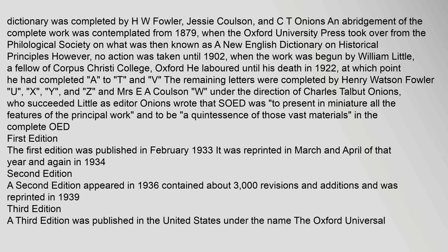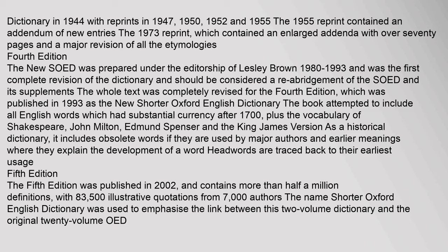A third edition was published in the United States under the name The Oxford Universal Dictionary in 1944, with reprints in 1947, 1950, 1952, and 1955. The 1955 reprint contained an addendum of new entries. The 1973 reprint contained an enlarged addenda with over 70 pages and a major revision of all the etymologies.